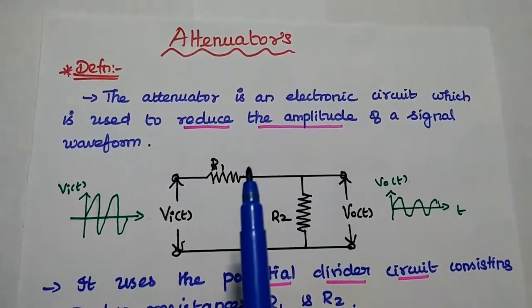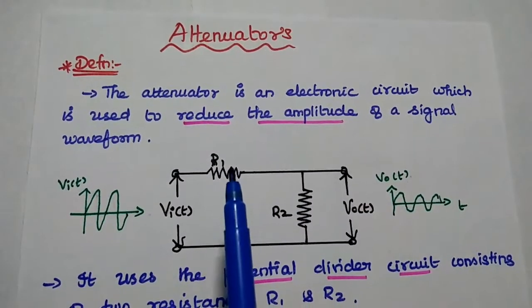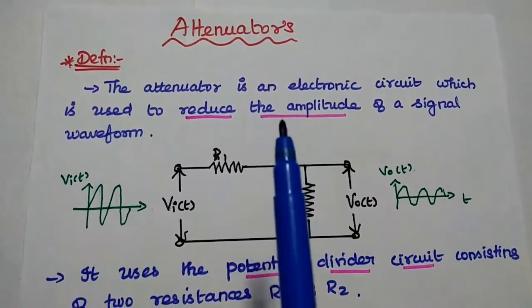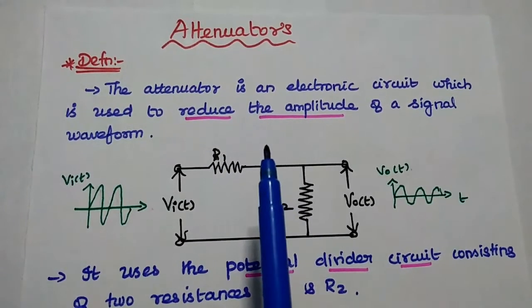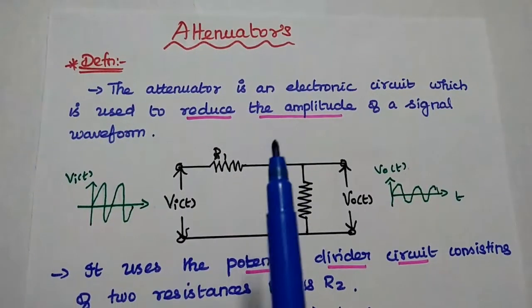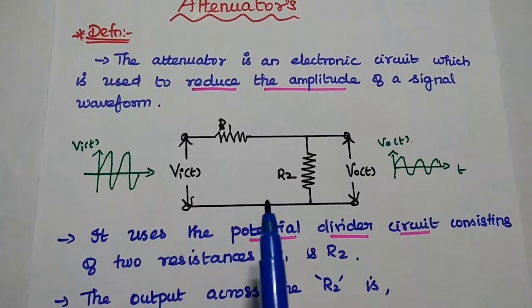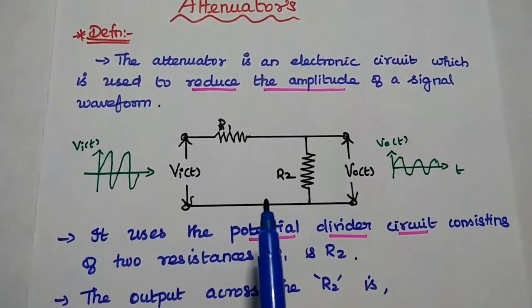It is just opposite to the amplifier. Amplifier is used to amplify or increase the amplitude, but these attenuators are mainly used to reduce the amplitude of a signal. This attenuator uses the potential divider circuit to reduce the amplitude.